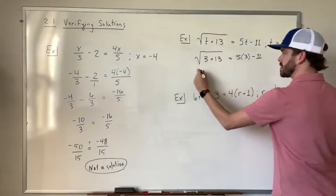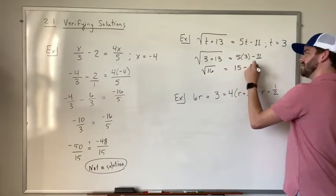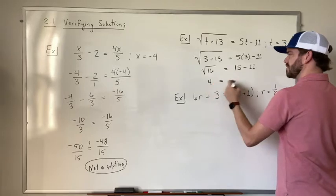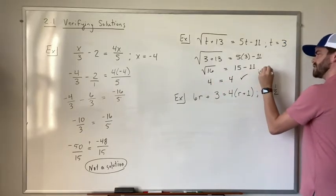3 plus 13 gives us the square root of 16 is equal to 15 minus 11. And the square root of 16 is 4. 15 minus 11 is 4. This checks out it is a solution.